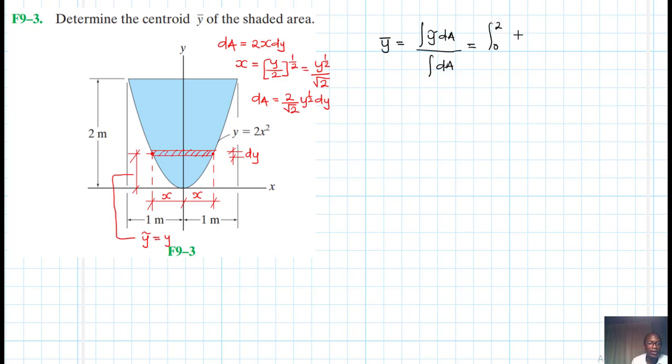Our y-count we say this is just y. Our dA we say this is equal to 2 divided by root of 2, then we have y to the power half, and then dy. And this is just divided by our dA, which is 2 over root of 2, y to the power half dy.